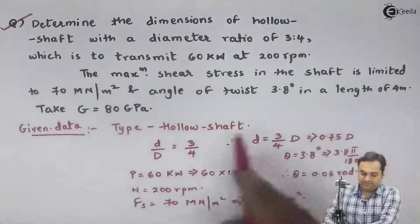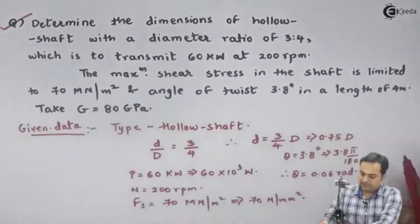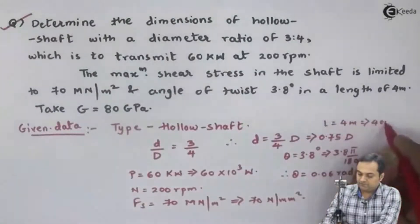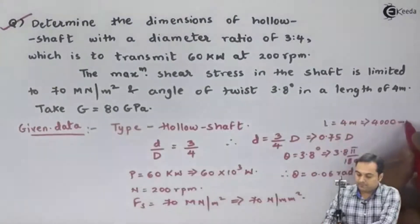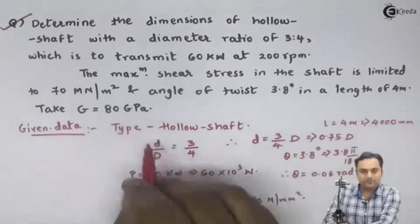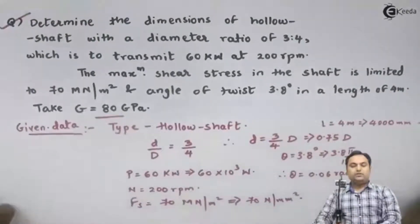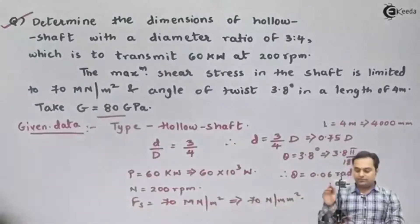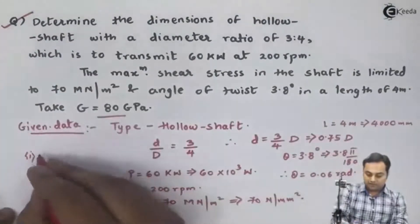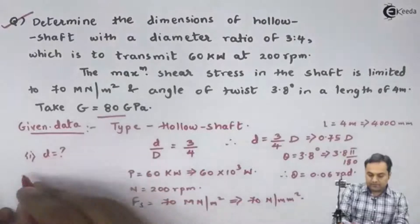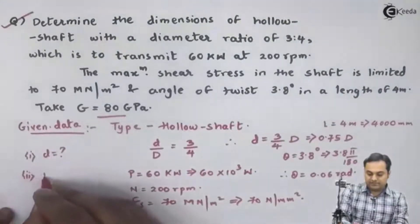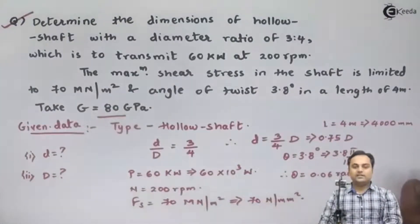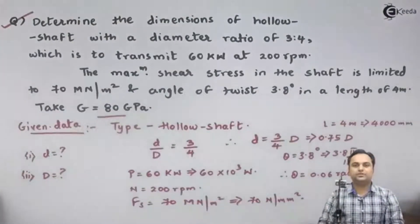Length of the shaft is 4 meters, that is 4000 mm. Modulus of rigidity G is given in the question. For dimensions of the hollow shaft we need to find the inner diameter and the external diameter. With this data available, let us proceed to the solution.